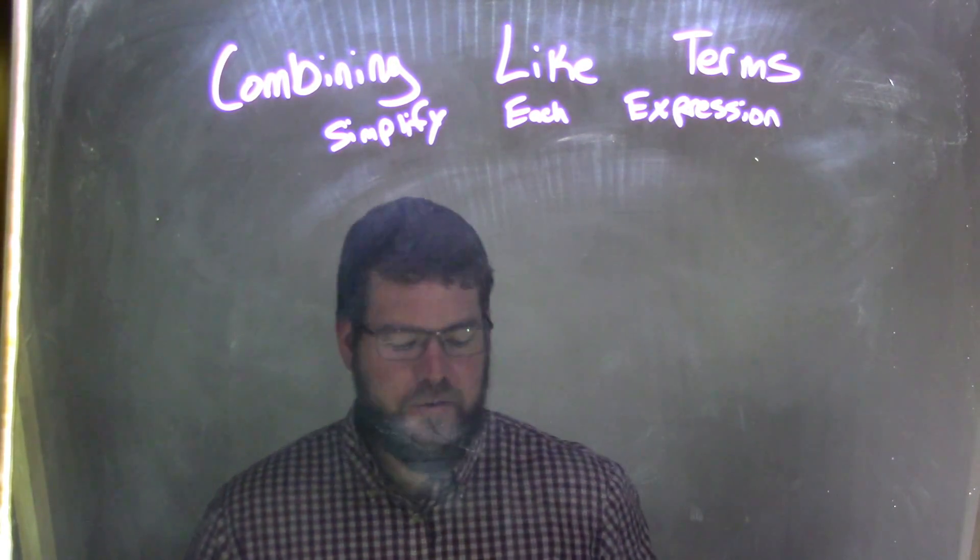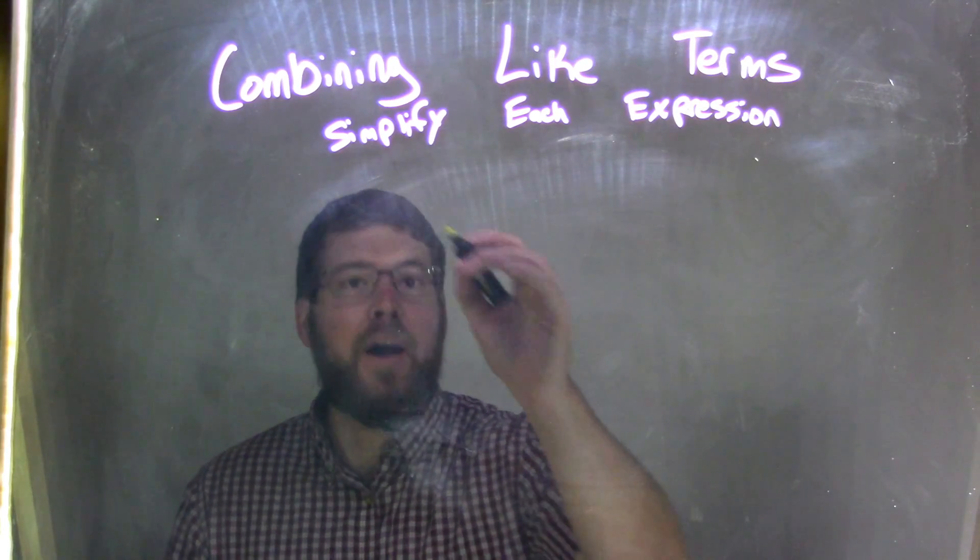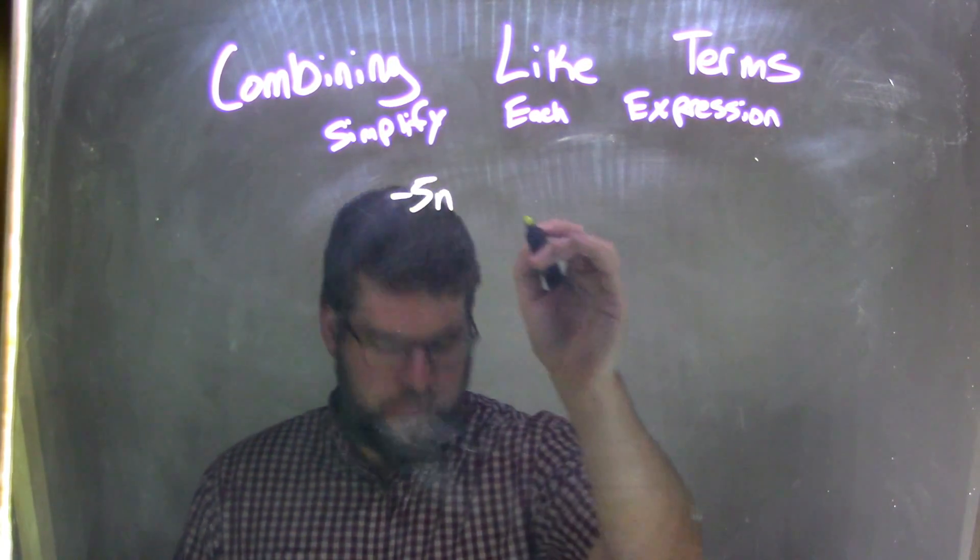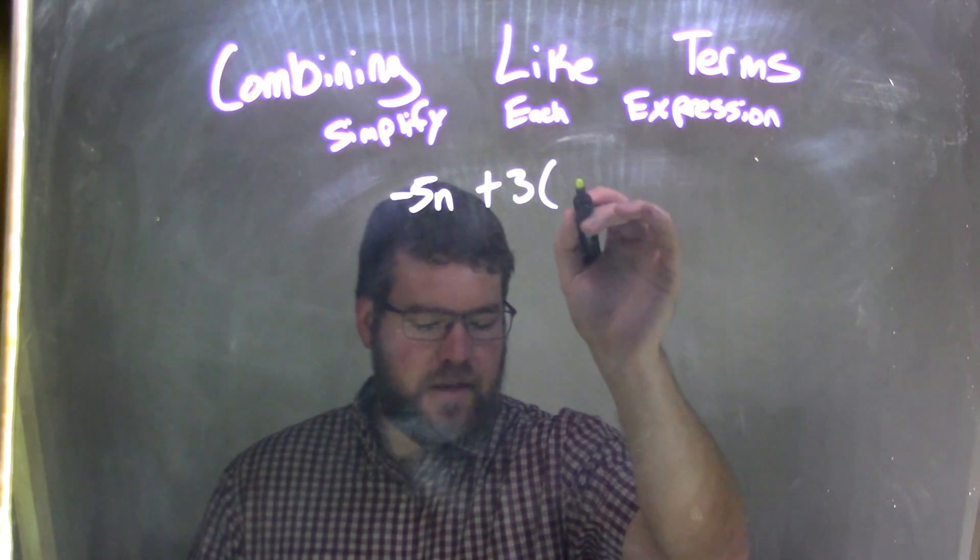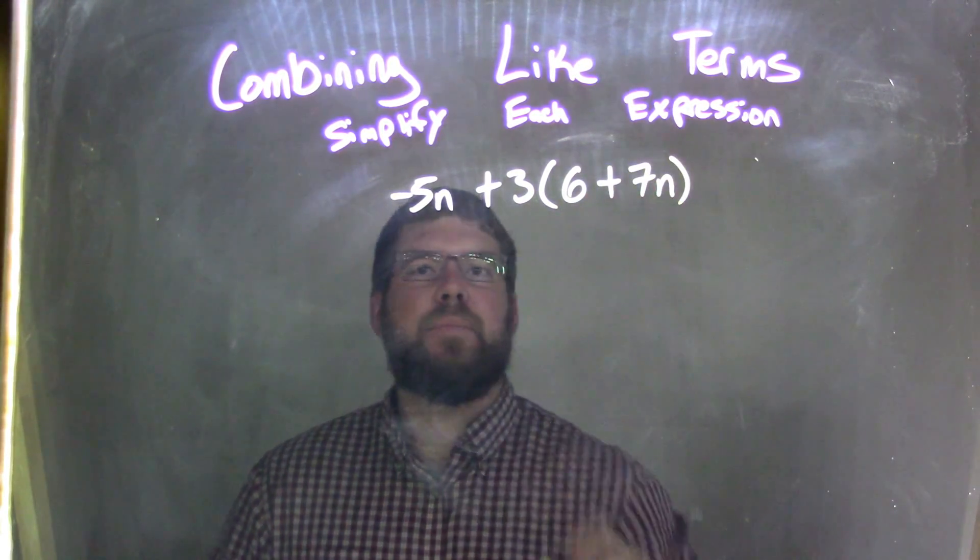So, if I was given this expression, negative 5n plus 3 times 6 plus 7n, okay?